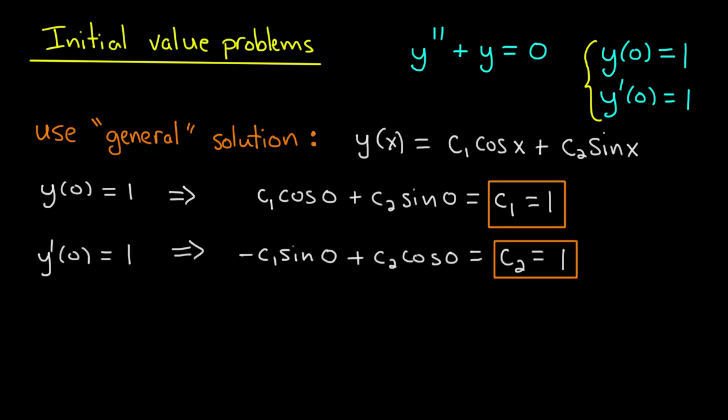Plugging in y' into the general solution again, I differentiate the general solution, plug in 0 for x, and I get minus c1 times sin(0) plus c2 cos(0). Again, sin(0) is 0, cos(0) is 1. So the second initial condition, the initial condition on the derivative, gives me c2 equals 1.